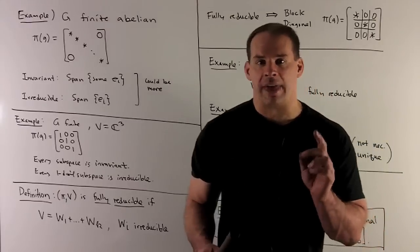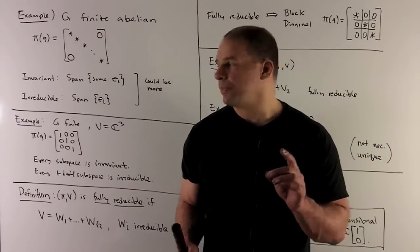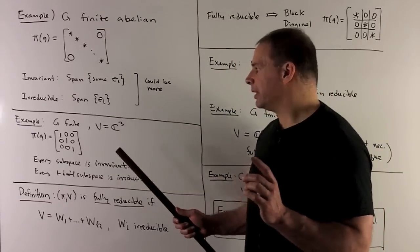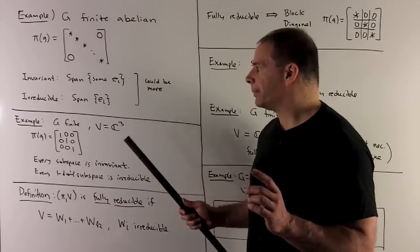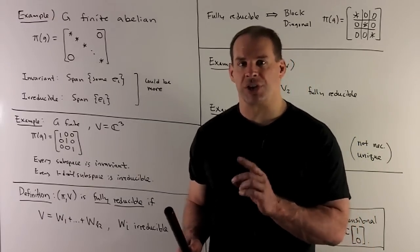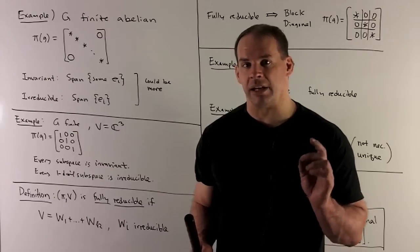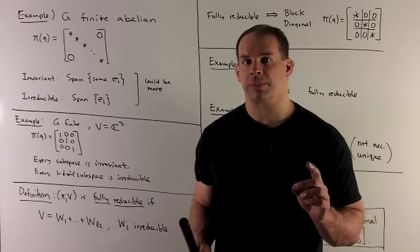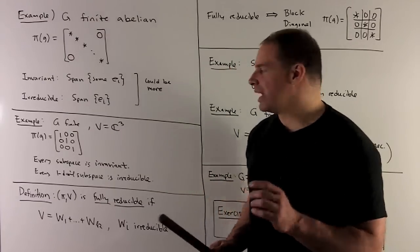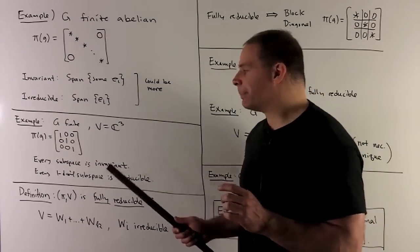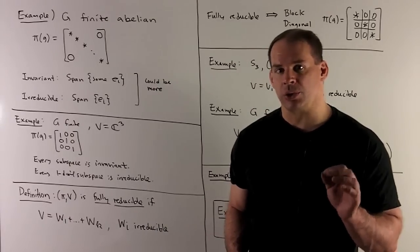Without the full theory, we still have the following example. On G finite with V = ℂ³, our representation is just going to carry each group element to the 3×3 identity matrix. Then every subspace is invariant, and every one-dimensional subspace is irreducible.